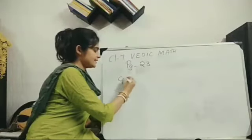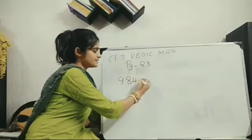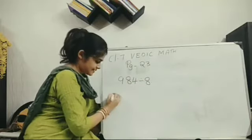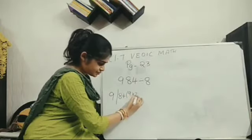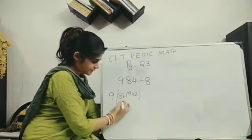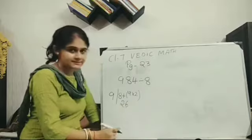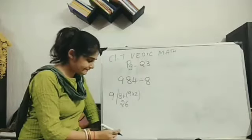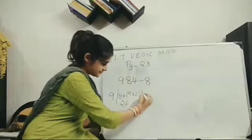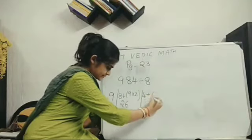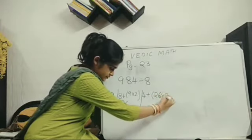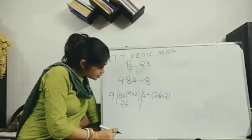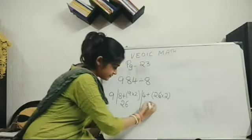Okay. Next. 984 divided by 8 again. 9 comes down. Then 8 plus 9 into 2. Together if you do, it will be 26. Okay. Next. One more part is left. 4 plus, now 26 into 2. So here you will get 52 plus 4. That means 56.